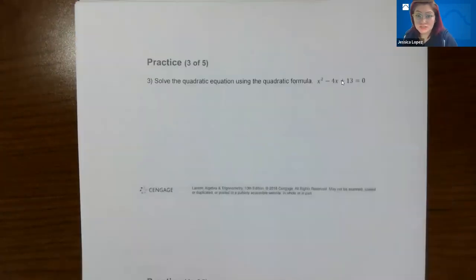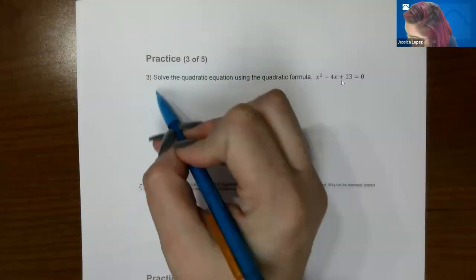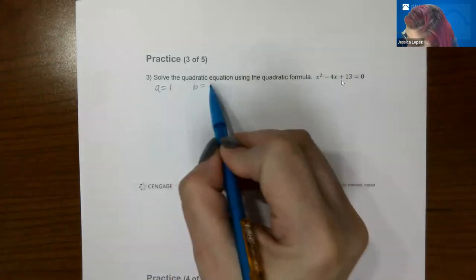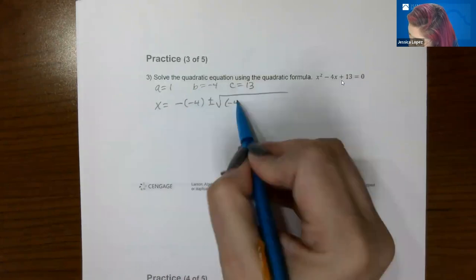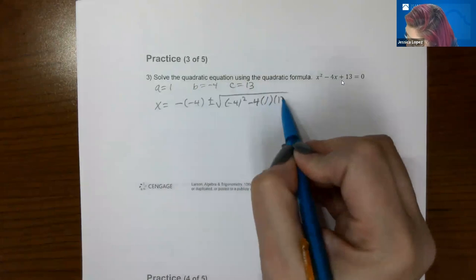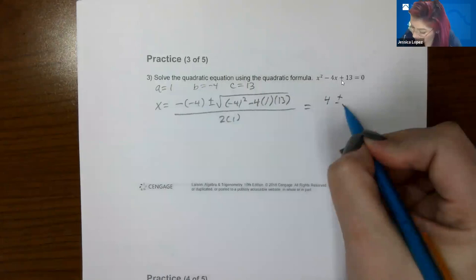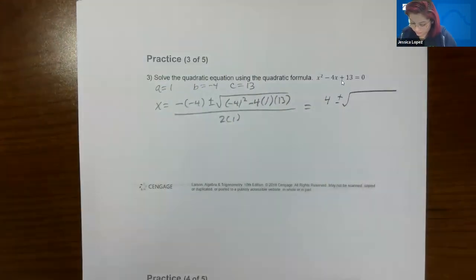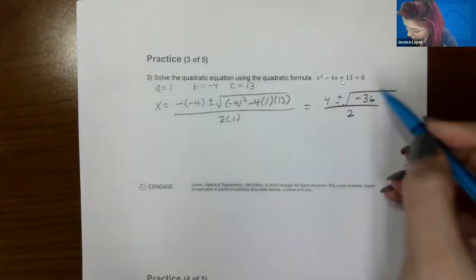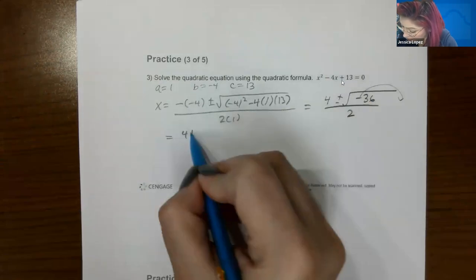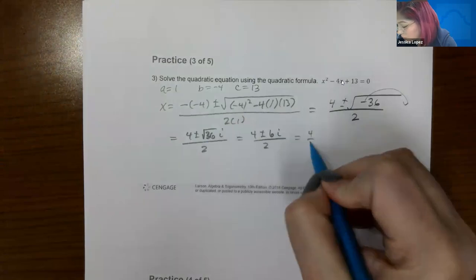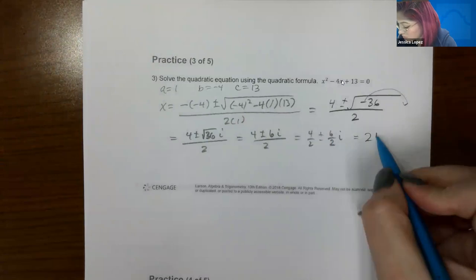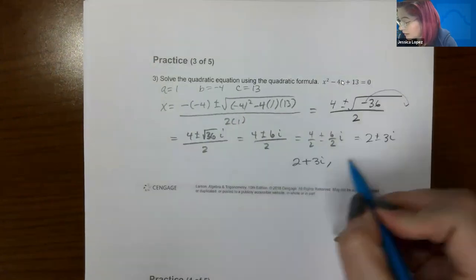Practice 2: solve the quadratic using the quadratic formula. It's already equal to zero. A = 1, B = −4, C = 13. So x = [4 ± √(16 − 52)] / 2 = [4 ± √(−36)] / 2. The negative comes out as i and √36 = 6, giving [4 ± 6i] / 2. Simplifying: 4/2 ± 6i/2 = 2 ± 3i. So the two answers are 2 + 3i and 2 − 3i.